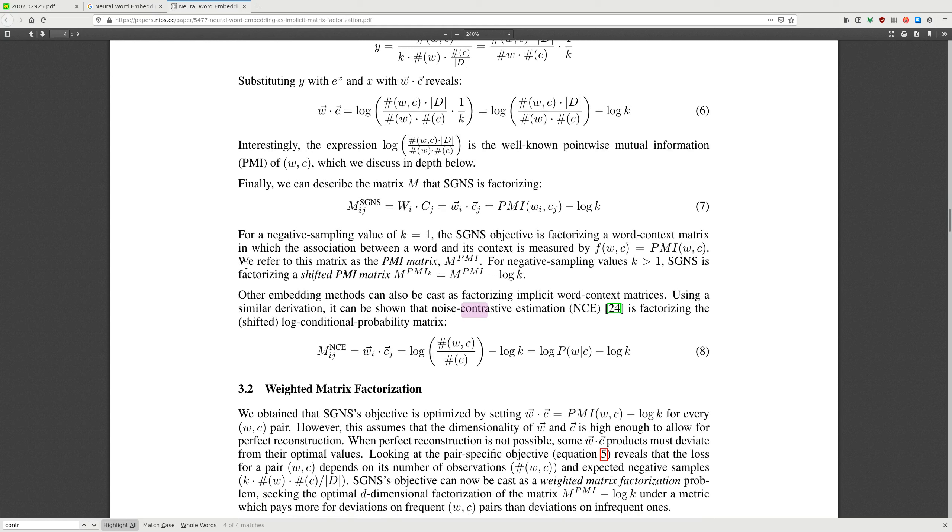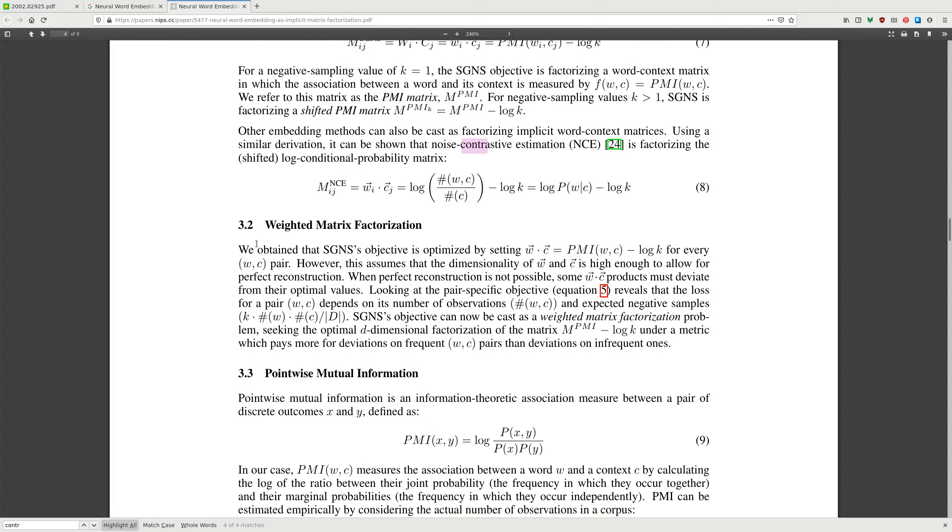For negative sampling, value of k equals 1. SGNS objective is factorizing a word-context matrix in which the association between word and context is measured by frequency, which is PMI. We refer to this matrix as PMI matrix. For negative sampling values k bigger than 1, SGNS is factorizing a shifted matrix PMI minus log k.